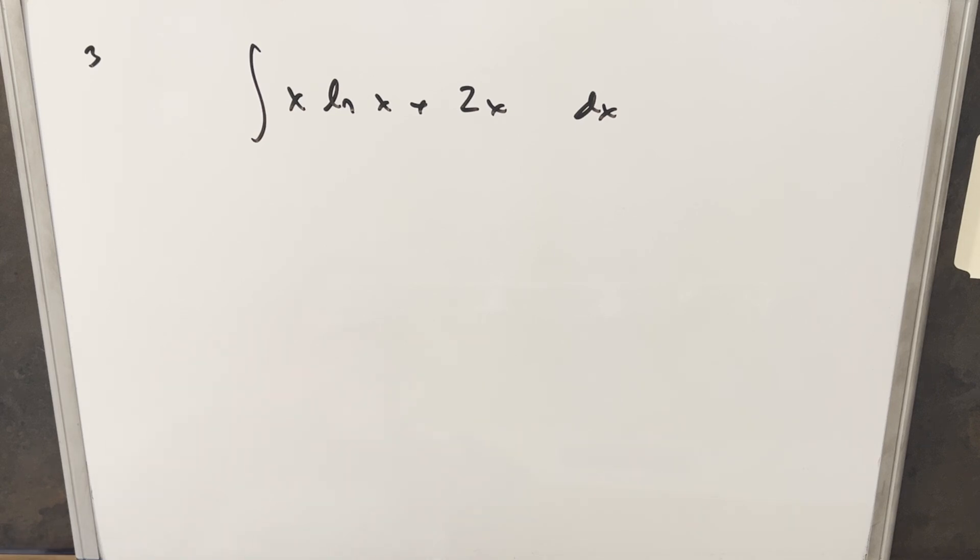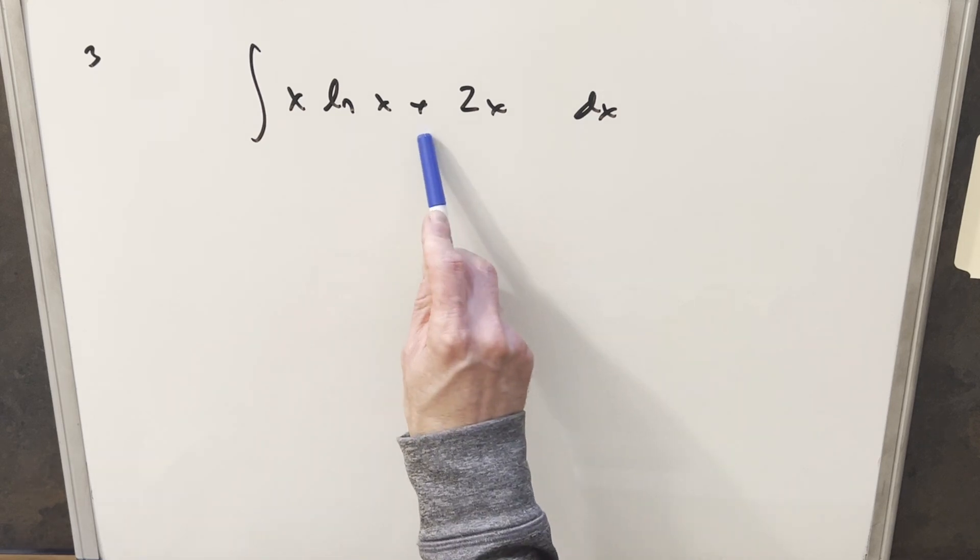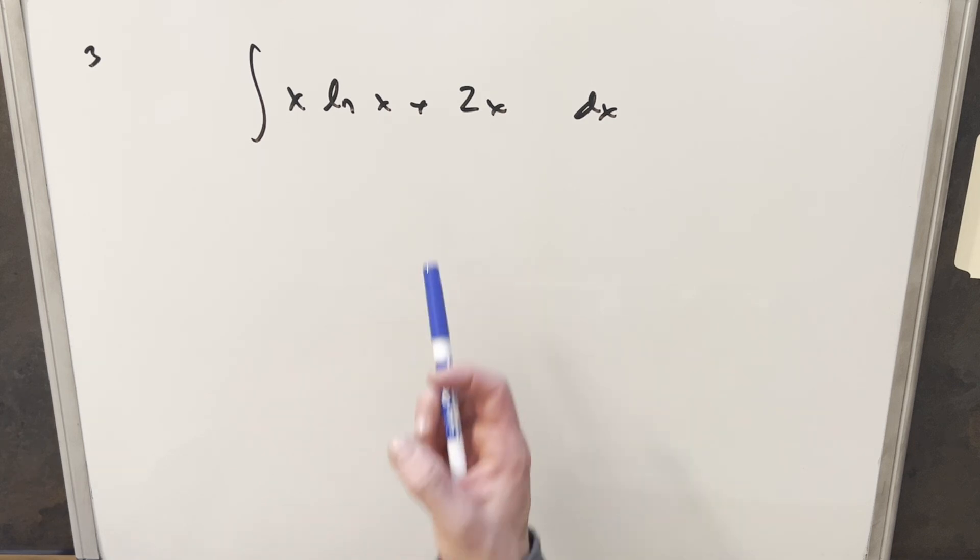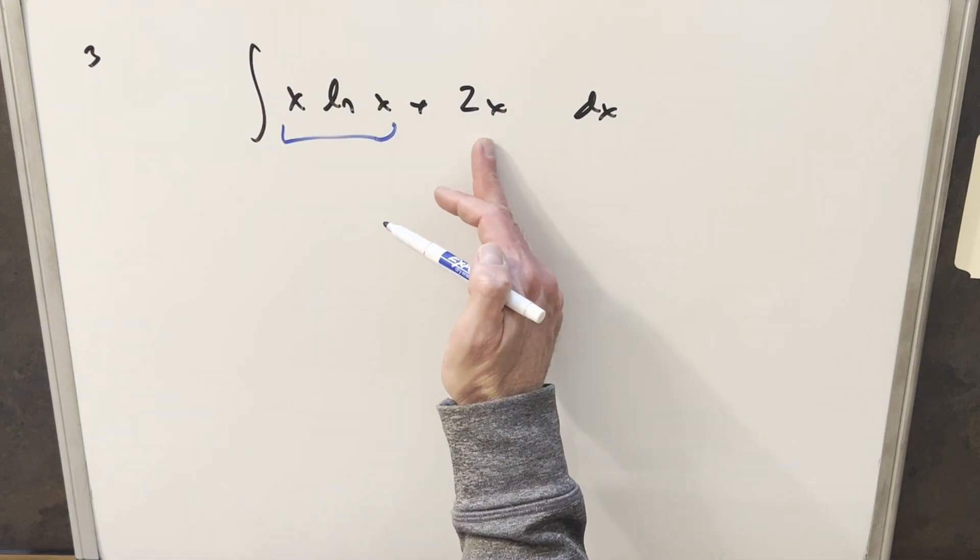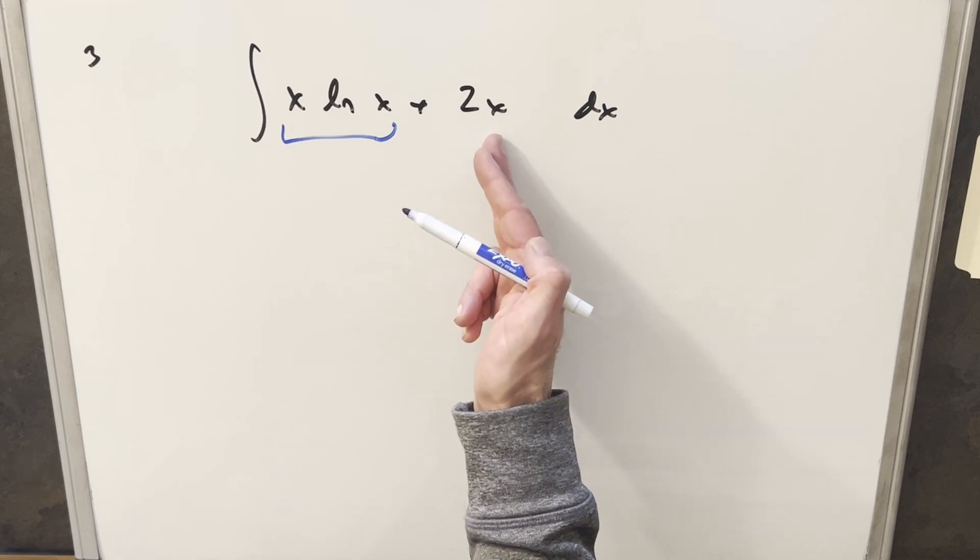Okay, so I couldn't really think of anything too fancy to do with this. It almost looked like we could use reverse product rule, and you could, but it's just not that great. So if you split this into two integrals, it's just power rule, and we finish this really fast.